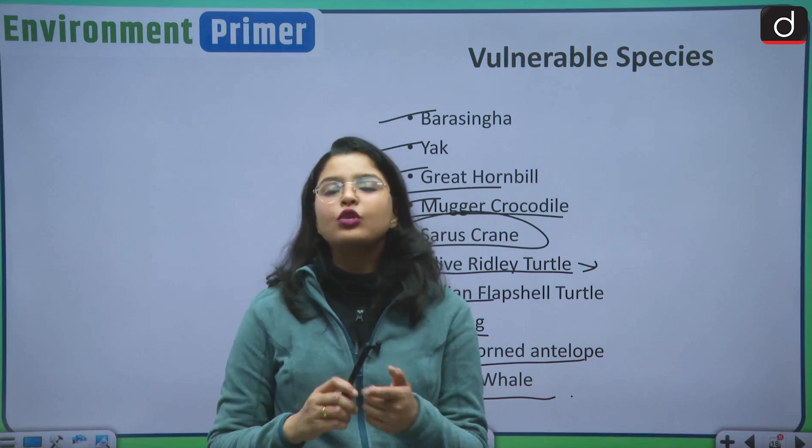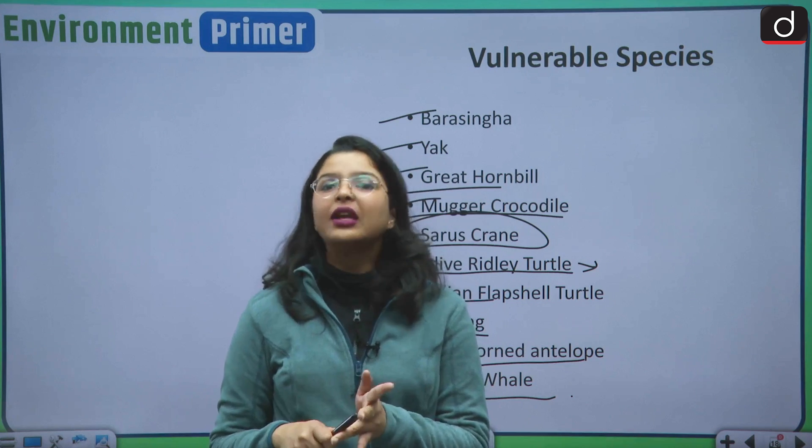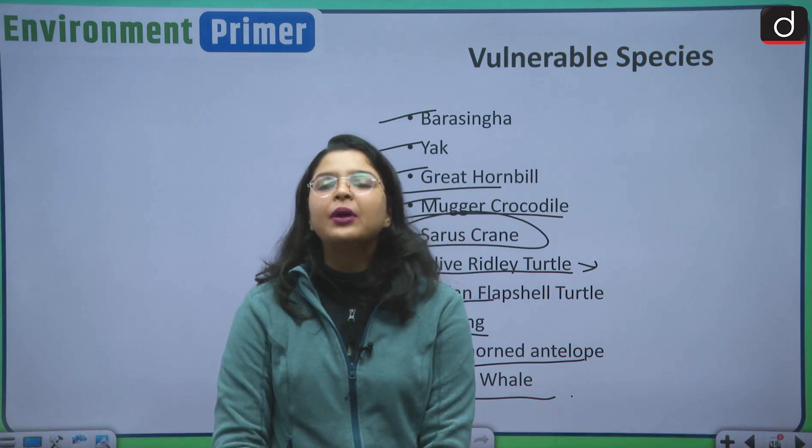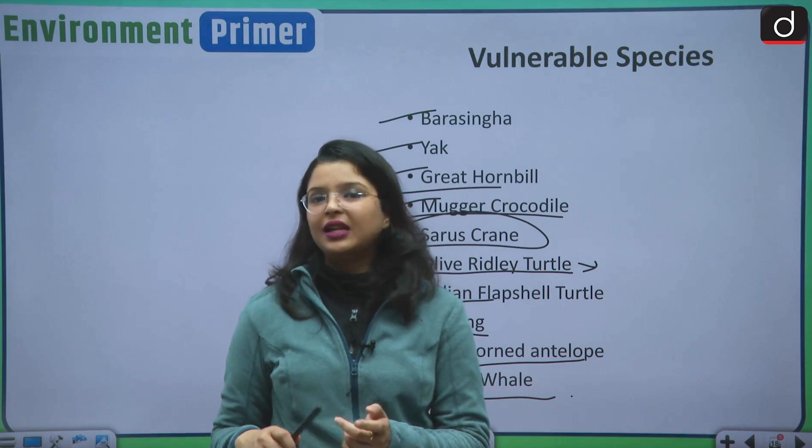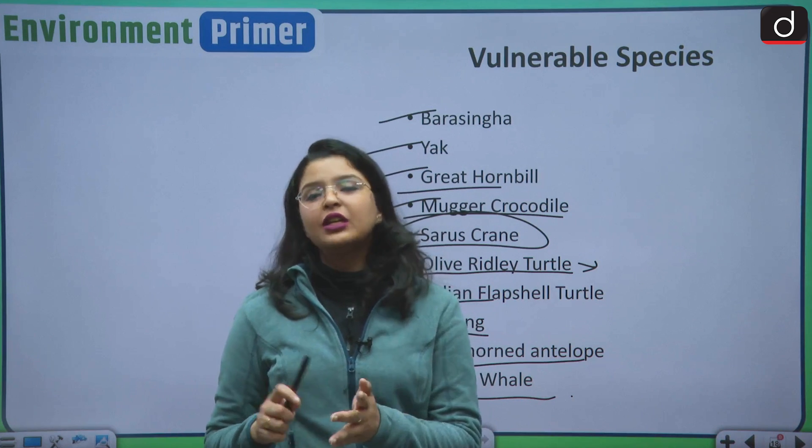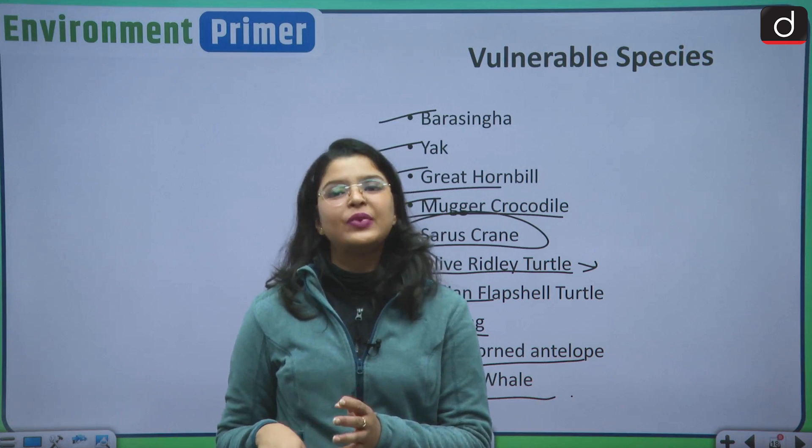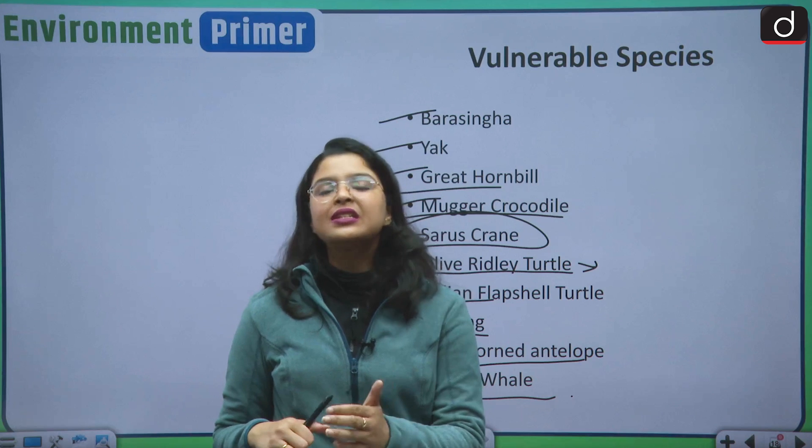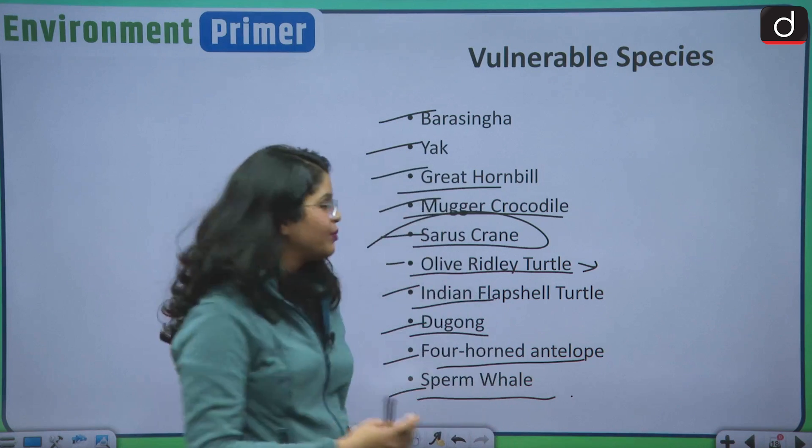As I have mentioned before also, questions generally come from critically endangered, endangered and vulnerable species in your examinations. With this, we have concluded our today's session. We have examined what is the IUCN red list. We have also seen what are the certain categories of critically endangered, endangered and vulnerable species in India. We have also seen what is the IUCN green status of species. Now, let us discuss a practice question for your prelims examination.